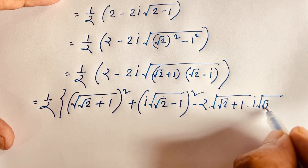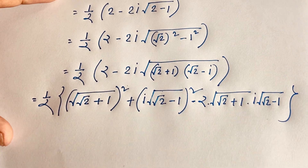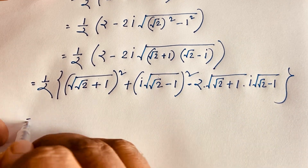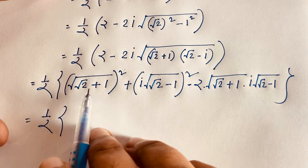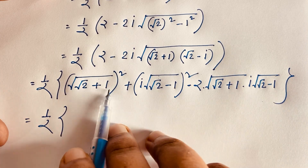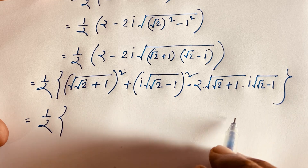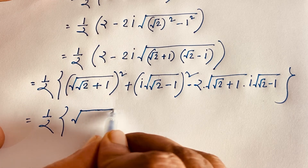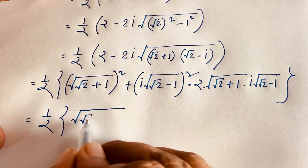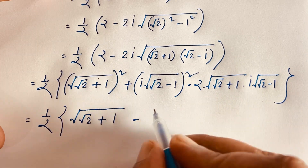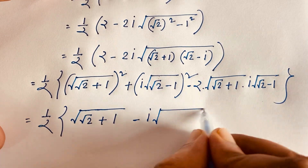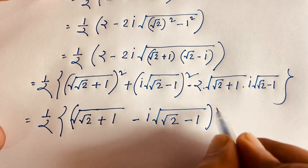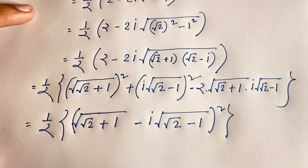We also have 2 times √(√2 plus 1) times i times √(√2 minus 1). This value and that value are the same. So thinking of this as 'a' and this as 'b', the law a² plus b² minus 2ab equals (a minus b)² applies.